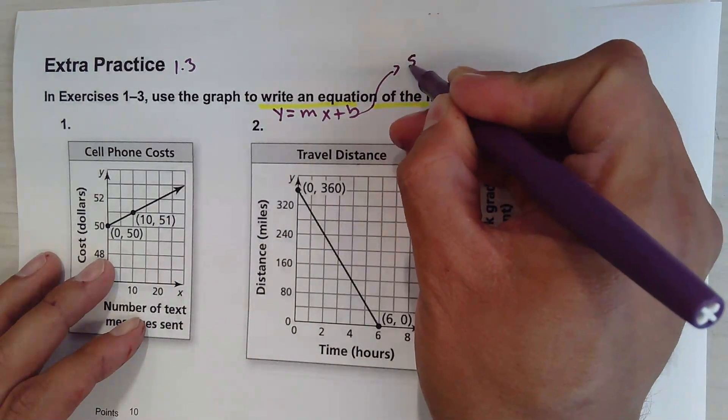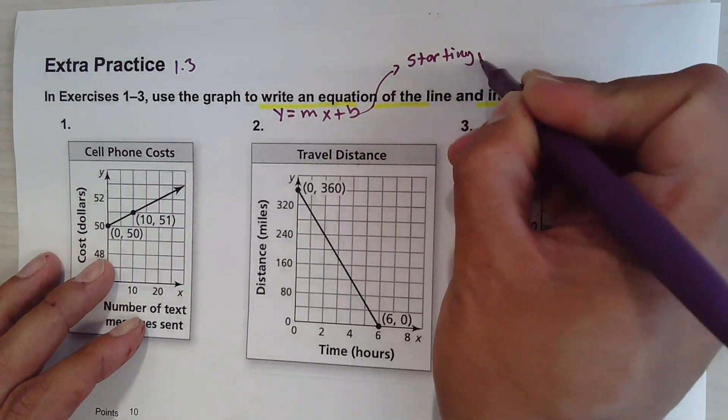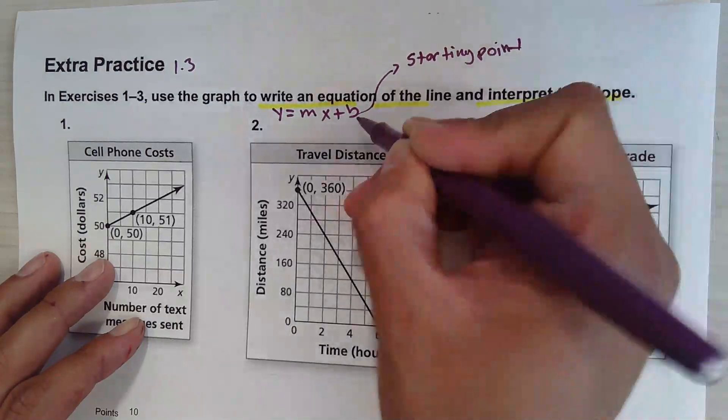The y-intercept is also known as the starting point. B is your y-intercept.